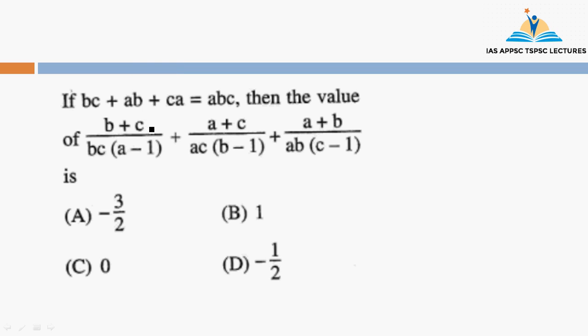If you choose this question, we need to recognize bc plus ab plus ca. This is a symmetrical expression because it involves all the variables. Then abc is also a symmetrical expression. So what is symmetry?